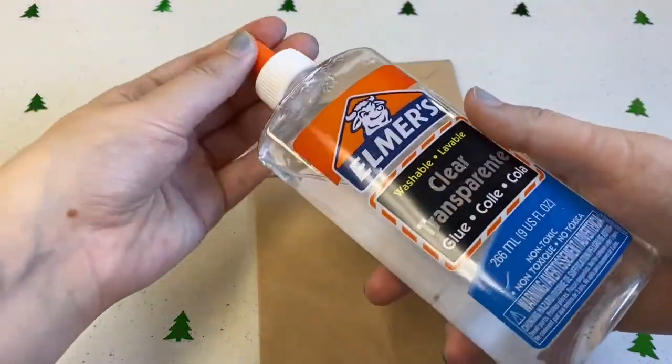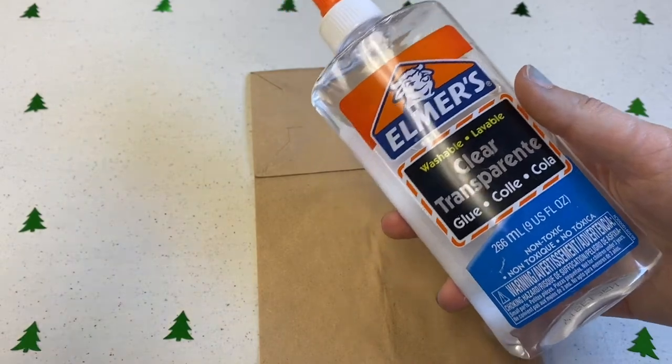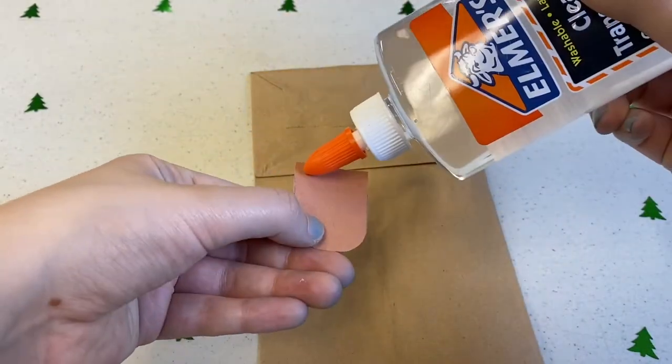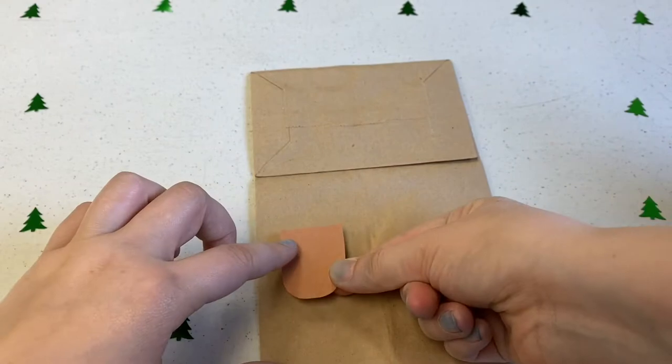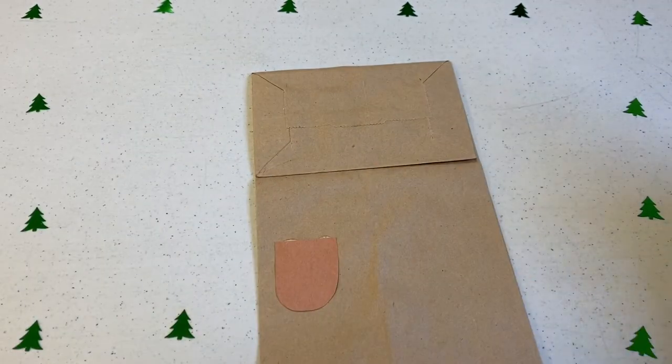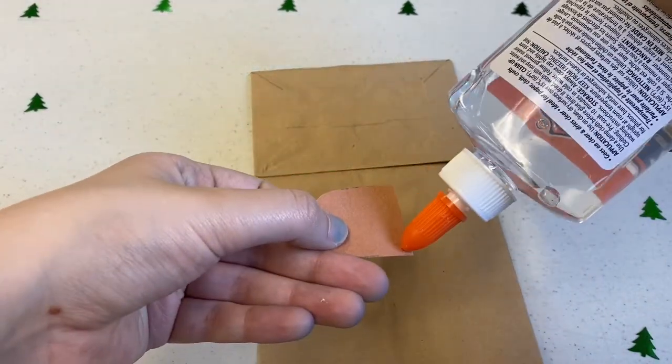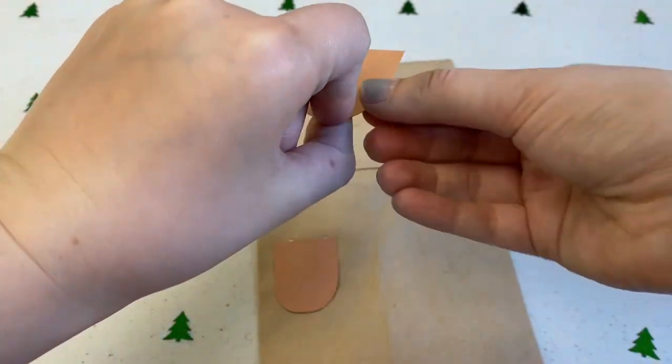We'll be gluing these onto the paper bag. It's just paper, so we don't need too much glue. Two of the half ovals will be the front paws. Stick these to the front of the bag like so.